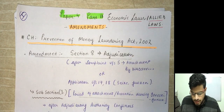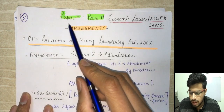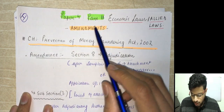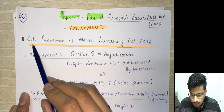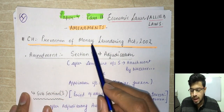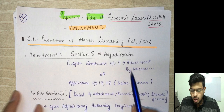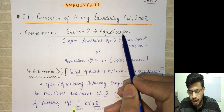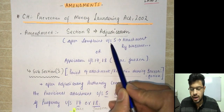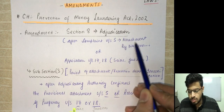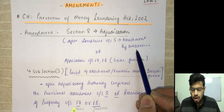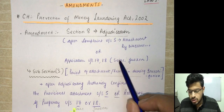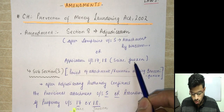Let's start with the amendments. This is for paper number four, part two — part one is your corporate law amendments. First chapter we are taking up is the Prevention of Money Laundering Act 2002. The amendment is in section number 8, which deals with adjudication after the complaint is filed under section 5 — attachment — or application under section 17 or 18, which relates to seizure and freezing of assets.